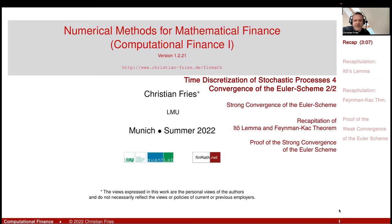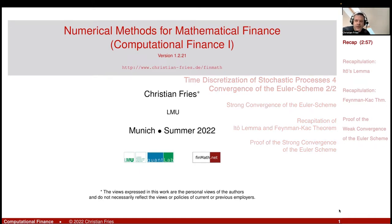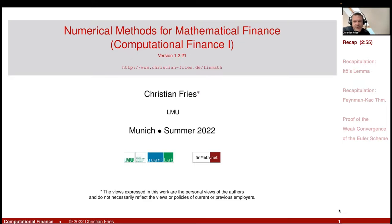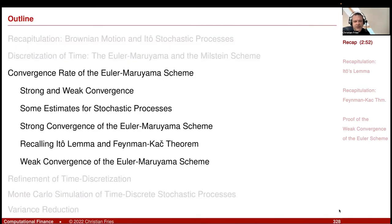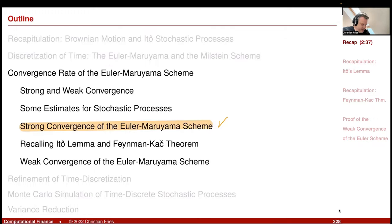We'll come back to numerical methods. We are still in our section on time discretization of stochastic processes. We have just proven the strong convergence of the Euler scheme. So our section is convergence rate of the Euler scheme. We have looked at the strong convergence of the Euler scheme — that part is now done. And now I would like to discuss the weak convergence of the Euler scheme.